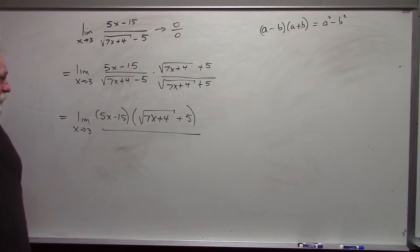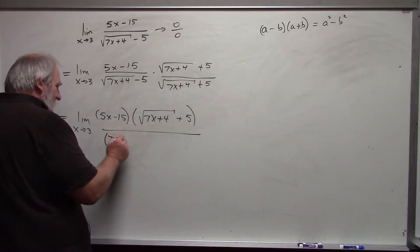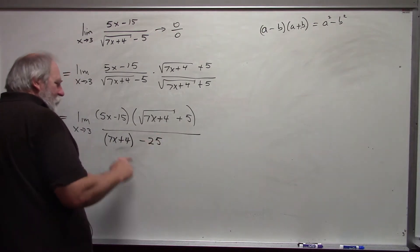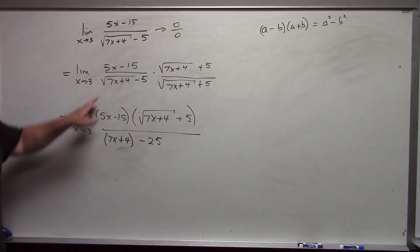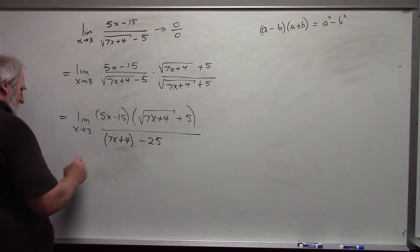We do need these parentheses in both places. Otherwise, it's not the same. My denominator becomes 7x plus 4 minus 25. A squared minus b squared. Your a being the square root of 7x plus 4. The b being 5. So, we can simplify this a little bit.